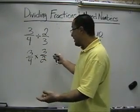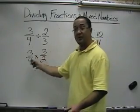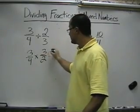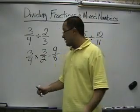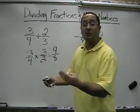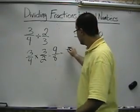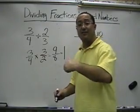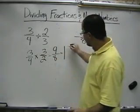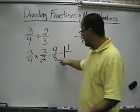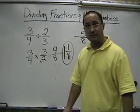We can cross-simplify if there's anything to cross-simplify. Is there anything here? No — 2 and 3 don't match, and 3 and 4 don't match, so we just multiply straight. 3 times 3 is 9, and 4 times 2 is 8. That's an improper fraction, so we convert it to a mixed number. How many times does 8 go into 9? One time — that's the whole number. 8 times 1 is 8, and 9 minus 8 is 1, so the remainder becomes the top of the new fraction and the denominator stays 8. So 9/8 becomes 1 and 1/8.